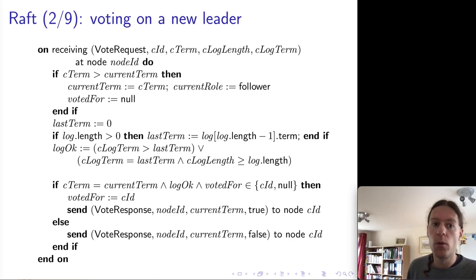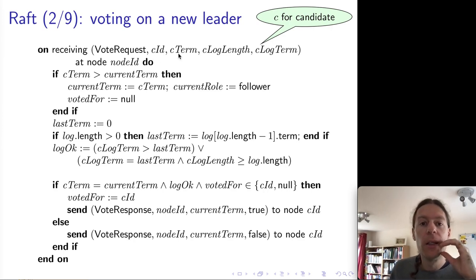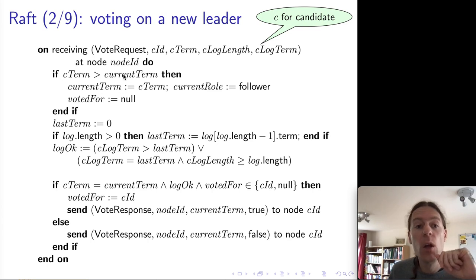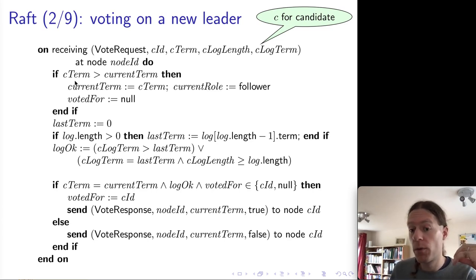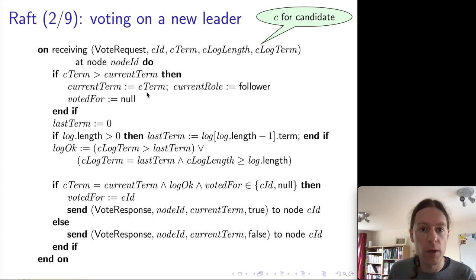Now let's see what happens on the other nodes that receive one of these voteRequest messages. We have the ID of the candidate, the term number of the candidate, the length of the candidate's log, and the term number in the candidate's last log entry. The first thing we do when receiving a voteRequest message is compare the candidate's term to the current term of the recipient. If the candidate's term is greater than the current term of the recipient, we move forward and join the candidate's term.